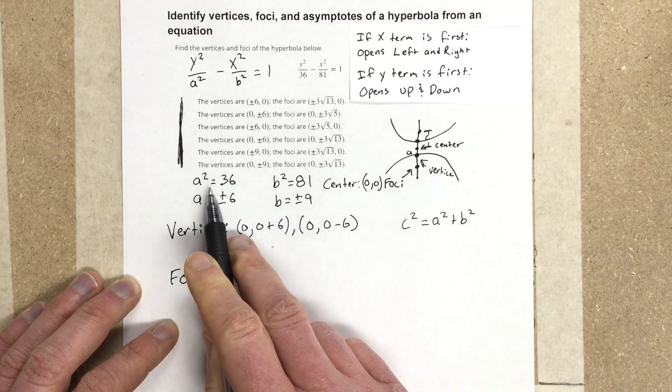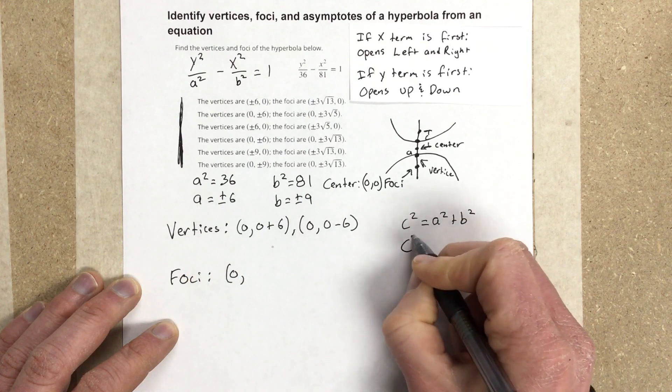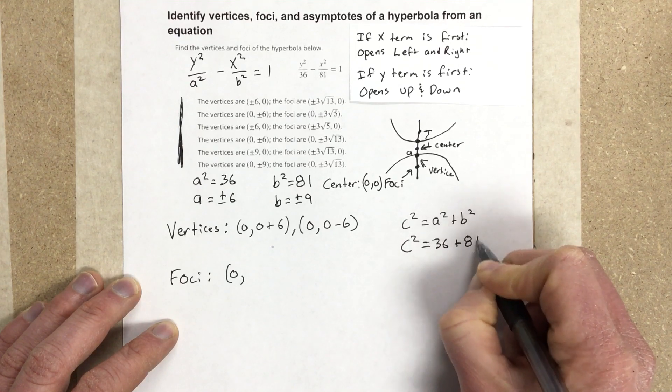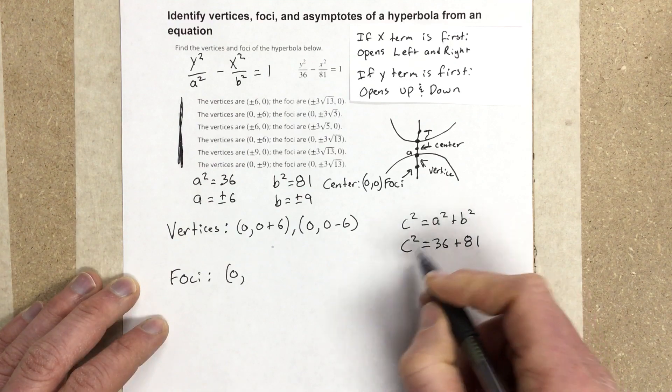We know a squared and b squared, so we can say c squared is equal to 36 plus 81.